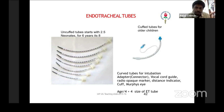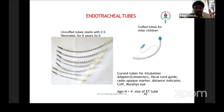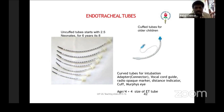The ET tube size is measured by inner diameter in millimeters, starting from 2.5 mm for neonates. What is the diameter of the ET tube? Based on that you have the sizes — 2.5 is the inner diameter, and for a 6-year-old the size of the ET tube comes around 8. Is there a formula? Yes — it is age divided by 4 plus 4 is the size for the ET tube.